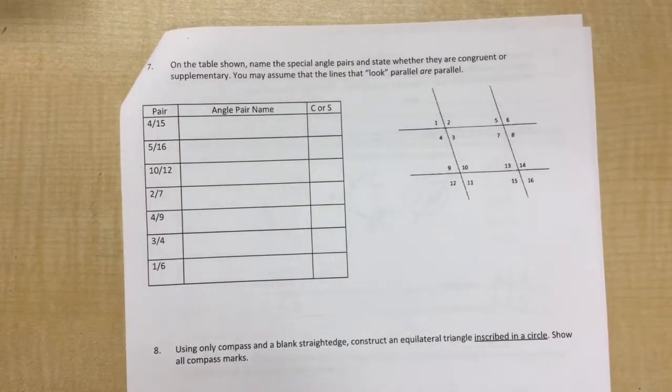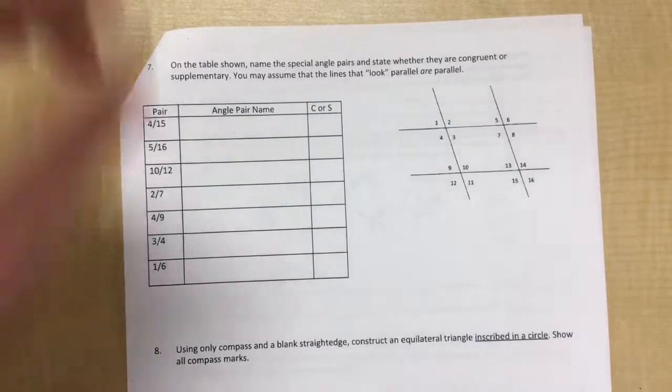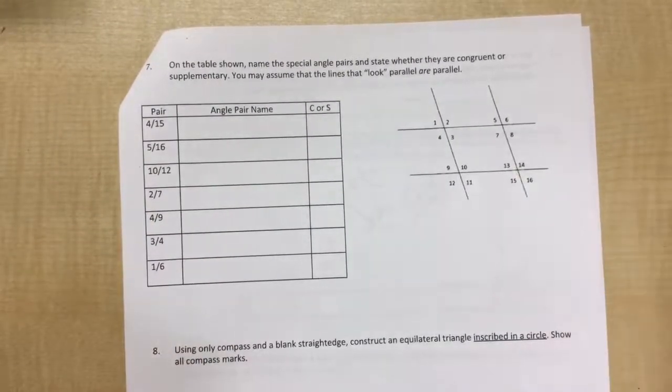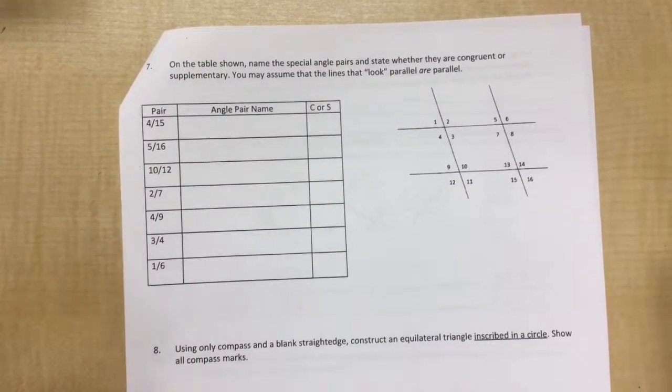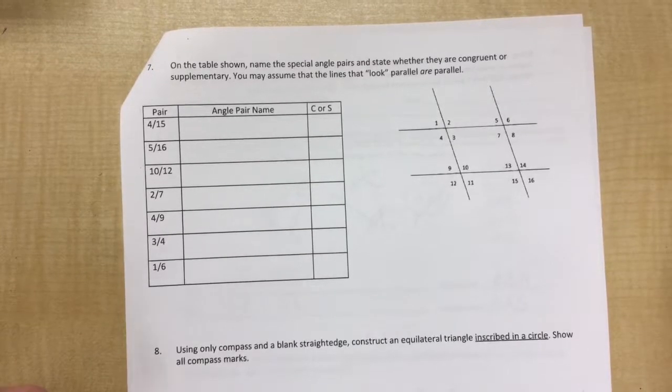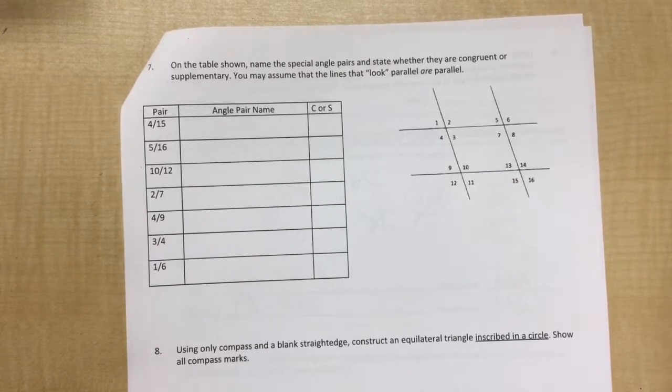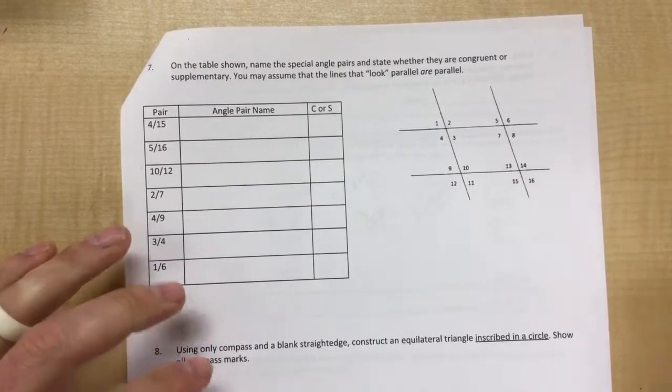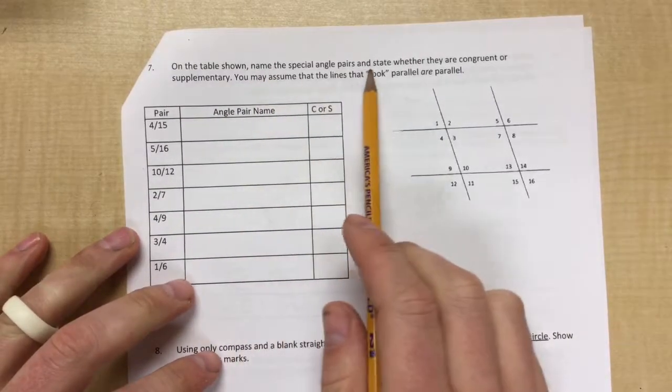Okay, video three. So for video three, we need to talk about all our special angle pairs. We have a lot of different angles here. On the table shown, we need to name the special angle pairs.